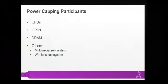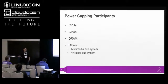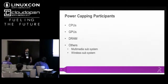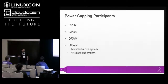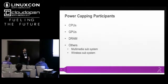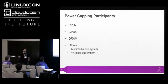So what are the power capping participants? These are devices where we can apply power capping — just examples, not a complete list. We can power cap CPUs, GPUs, DRAMs, and others like multimedia subsystems. We will limit our discussion to CPUs, GPUs, and DRAMs because together they can consume more than 55 to 60 percent of power. But there are already many technologies for wireless power capping too, so the system can cover many other components beyond these three.